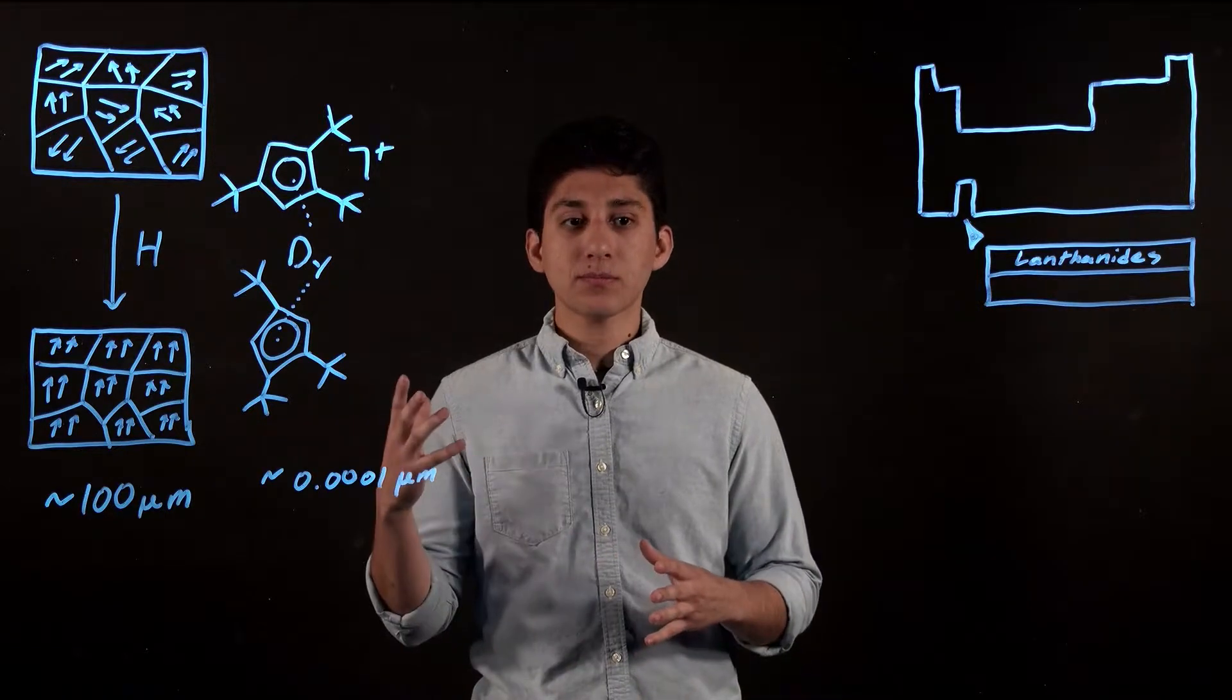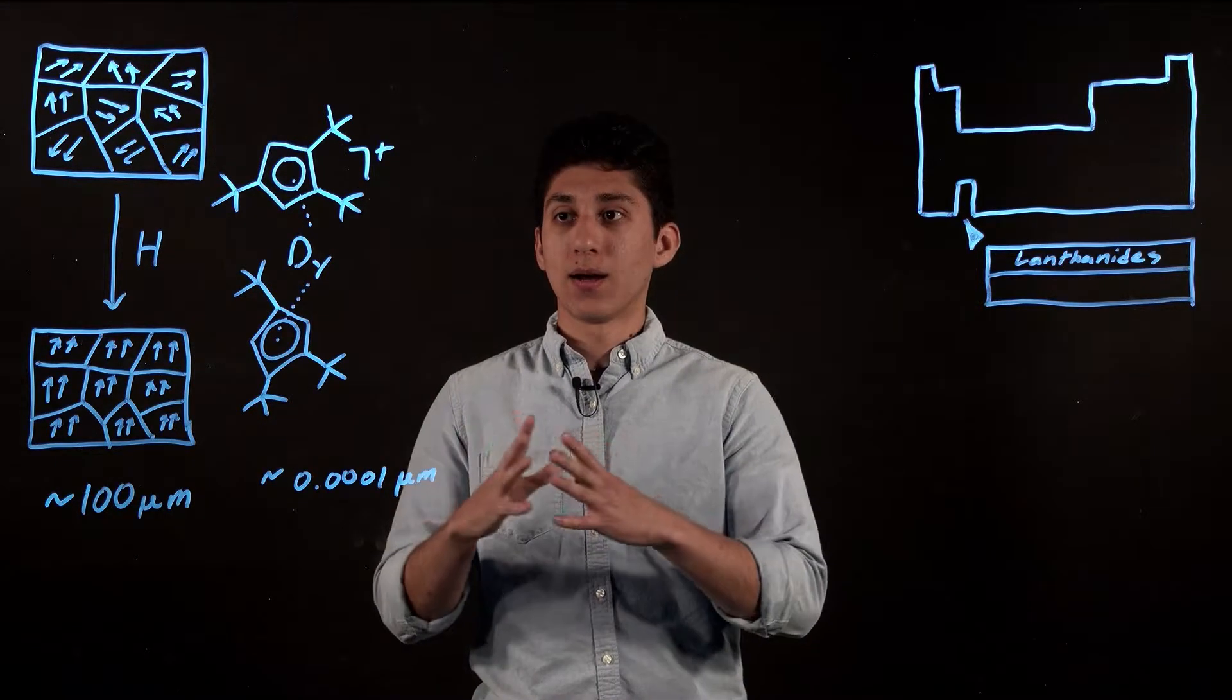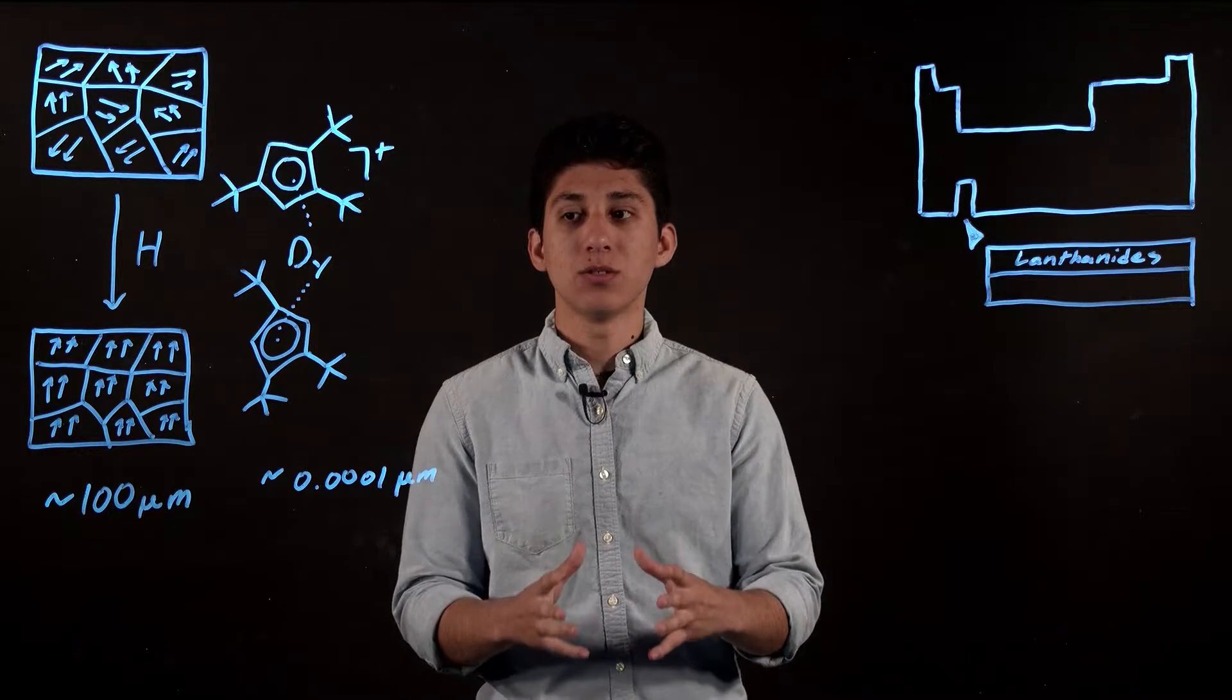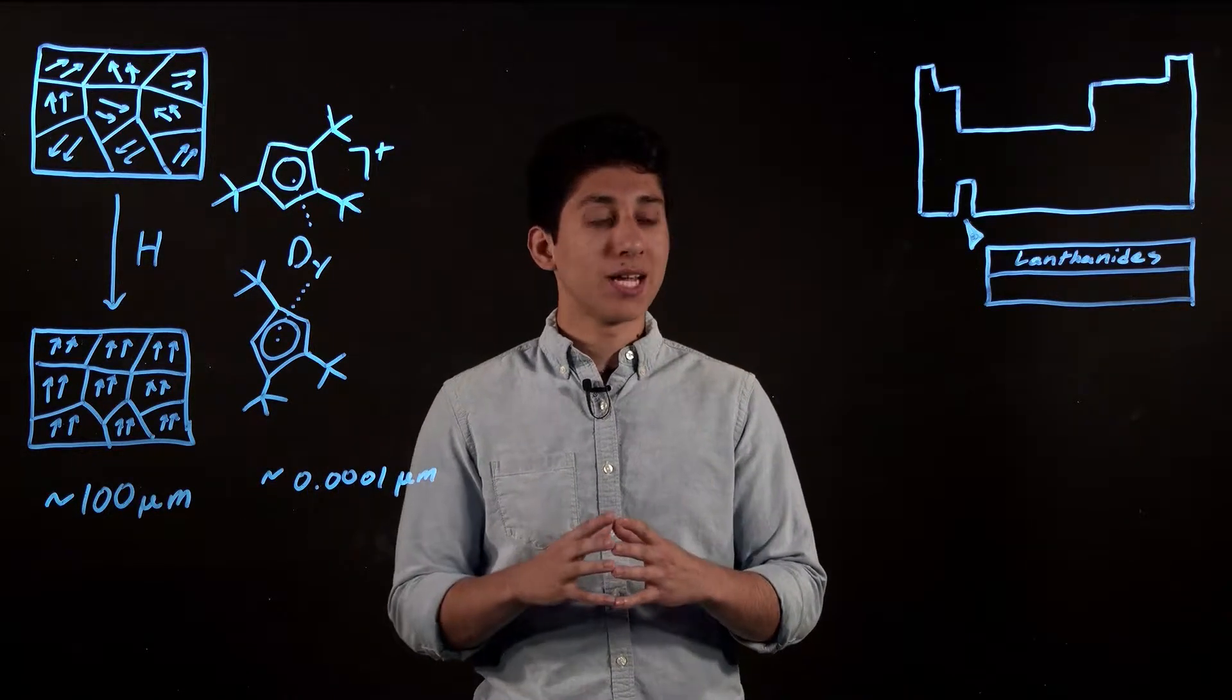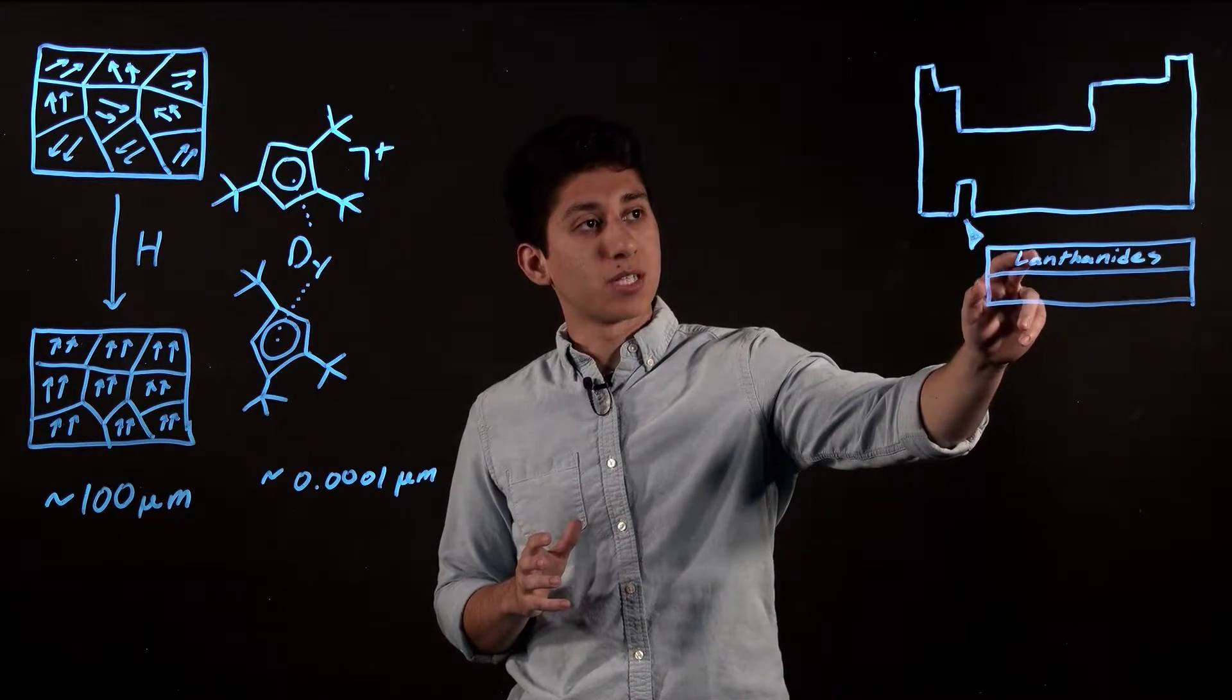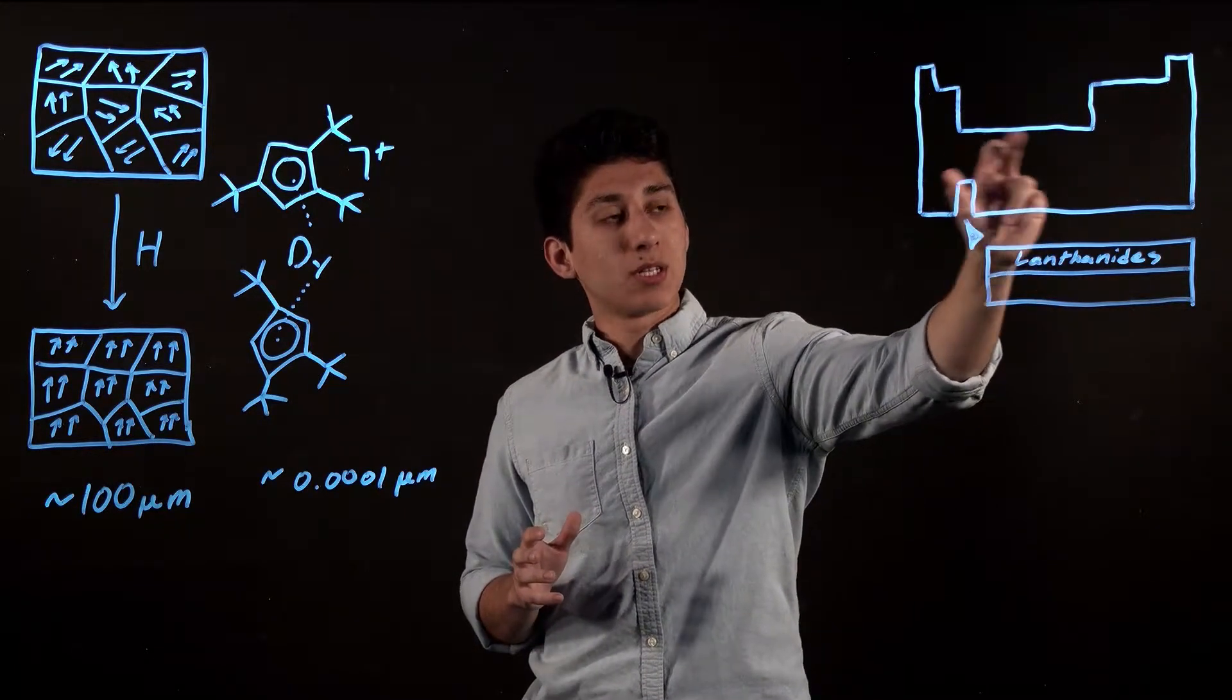With our single molecule magnets, we would be using lanthanides rather than transition metals. Lanthanides are located on this part of the periodic table, while transition metals are typically up here.